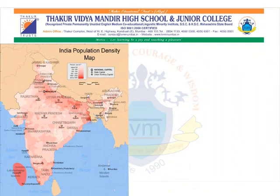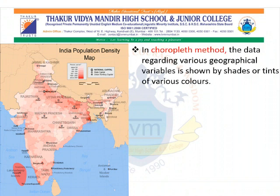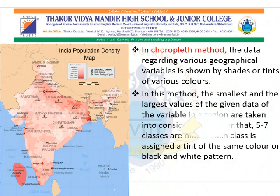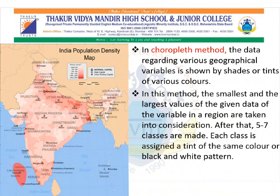In the Choropleth Map, the data regarding various geographical variables is shown by shades or tints of various colors. While making such maps, the data used for different variables is obtained through processes such as measurement, surveying, etc. In this method, the smallest and the largest value of the given data of the variable in a region are taken into consideration, and after that, 5 to 7 classes are made. In the given map — India population density map — we can see that different shades of colors are utilized.